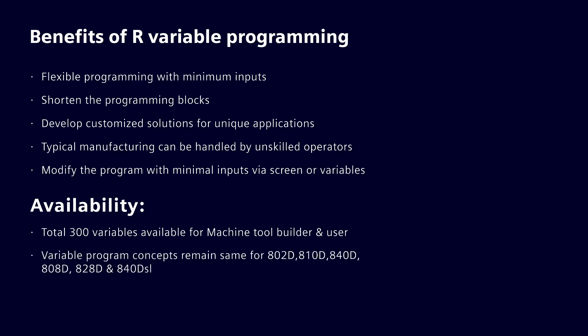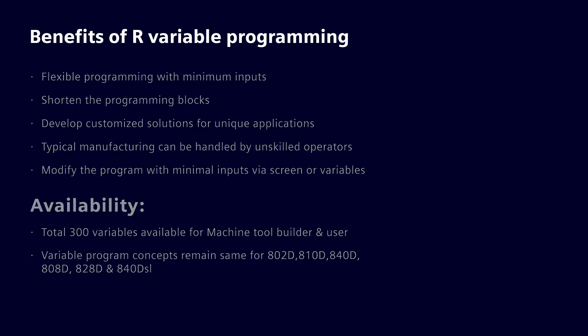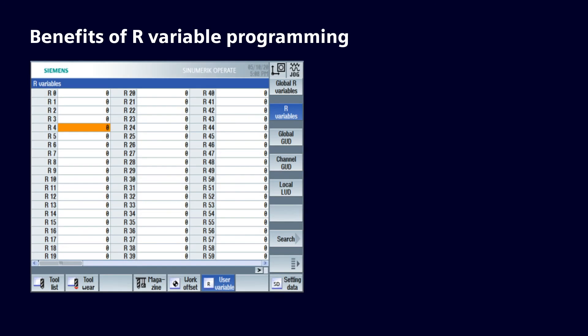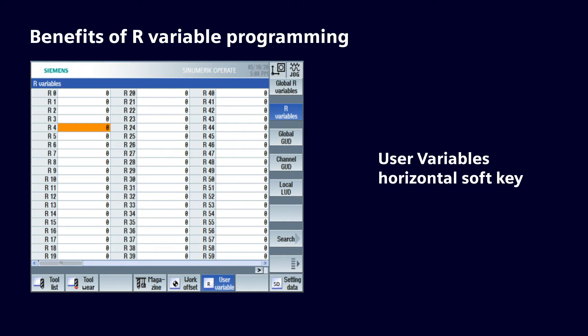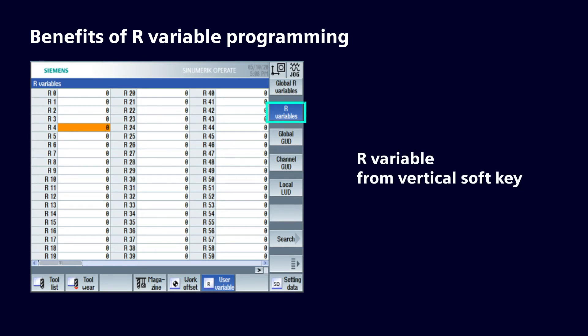With so many benefits, one would like to know how to see the R variables in the controller. It's very simple: select Offset, followed by the User Variables horizontal softkey, and select R Variable from the vertical softkey.